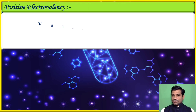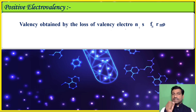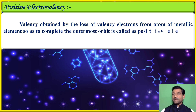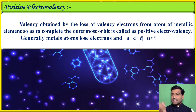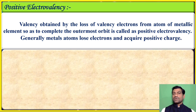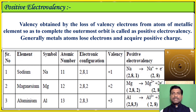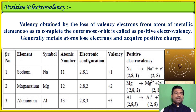Positive electrovalency is the valency obtained by the loss of valency electrons from atoms of metallic elements so as to complete the outermost orbit. Generally, metal atoms lose electrons and acquire a positive charge. Metal atoms have extra electrons in their outermost orbit, so they donate or lose electrons and have positive electrovalency. Examples include sodium, magnesium, and aluminium.